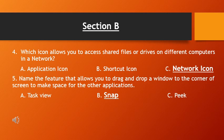Which icon allows you to access shared files and drives on different computers in a network? The three options are: application icon, shortcut icon, and network icon — the answer is network icon. Next: name the feature that allows you to drag and drop a window to the corner of the screen to make space for other applications. Options are Task View, Snap, and Peek — the answer is option B, Snap.